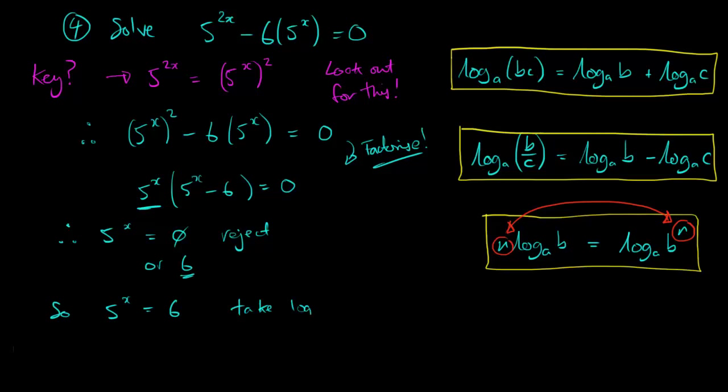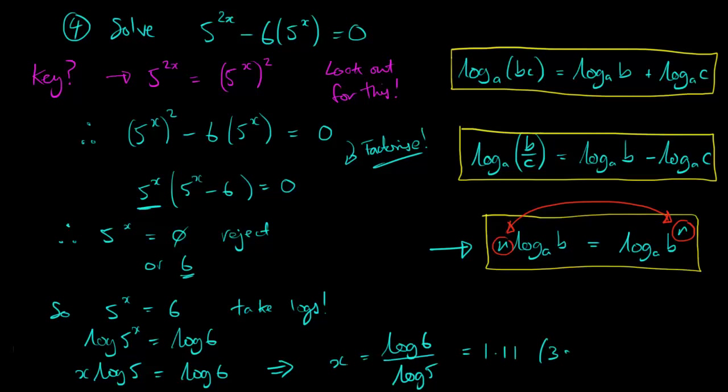5 to the power x equals 6, and this is like the equations which we did in the last lesson. We take logs of both sides. Log of 5 to the x is log of 6. Use the power law to bring the x out to the front. x log 5 equals log 6, and you'll recall that we just need to divide by log 5 now. So we end up with log 6 divided by log 5. And we're using base 10, but actually it doesn't matter, as long as you're consistent, and check that you can get the same answer, 1.11.